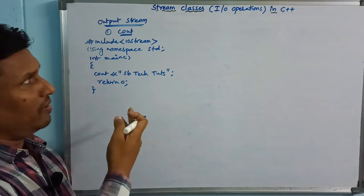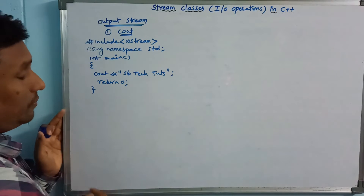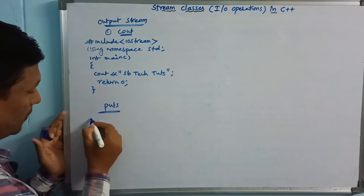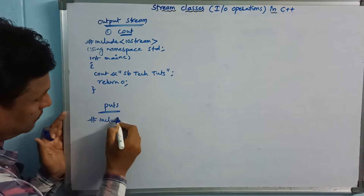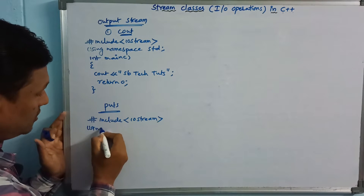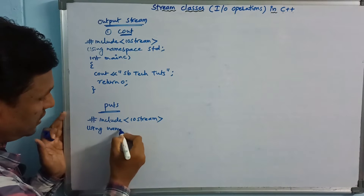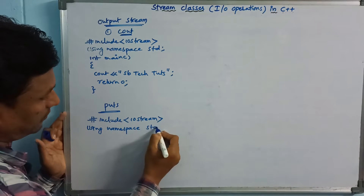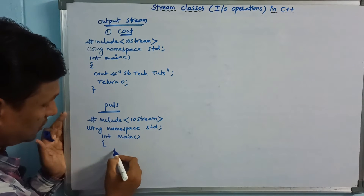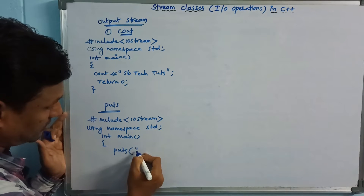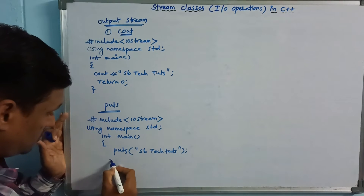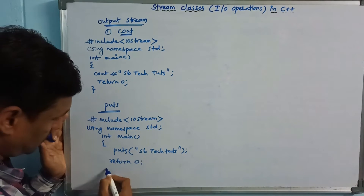This is using cout. For example, if you go to the program, you can see: hash include iostream, using namespace std, int main, and inside main, output as cout << "SB Tutes"; return 0. Then close.